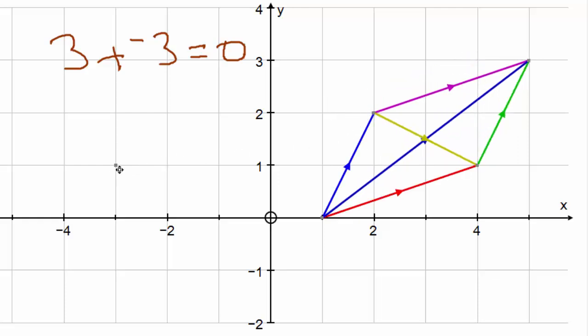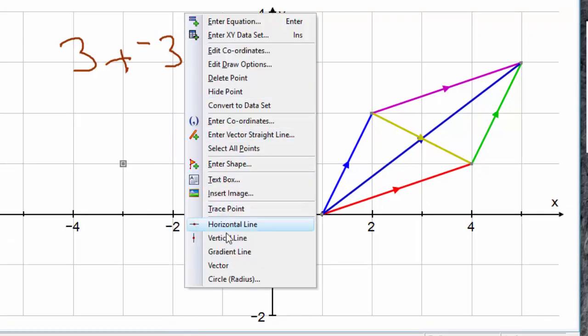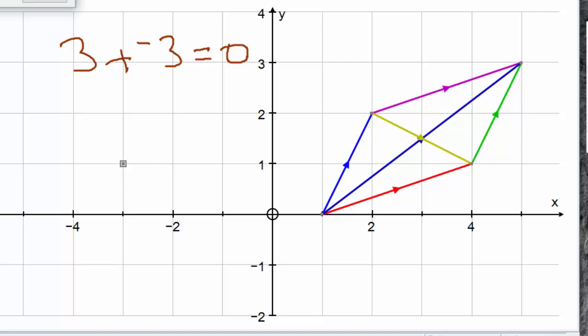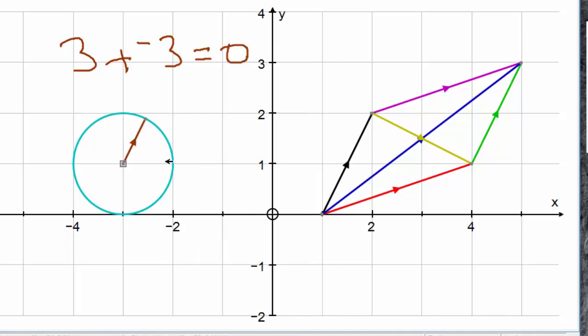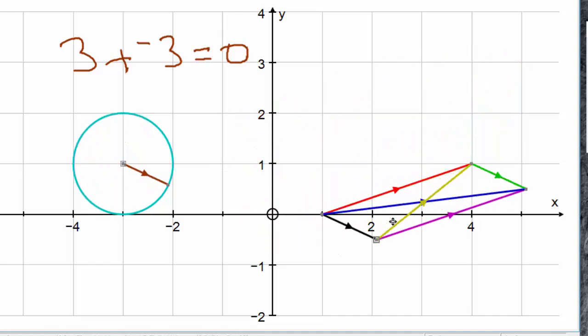We can also introduce the idea of a unit vector by putting a point here, a circle of radius one. And so if we ask for this vector and this point, and then the unit vector, you can see that it's in the same direction as this, but length one. And it merely goes around the circle like that.